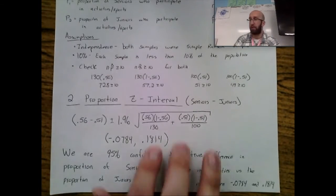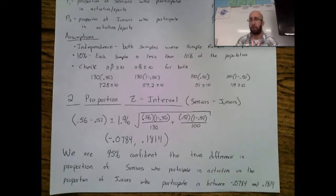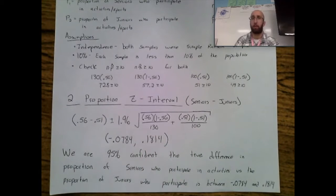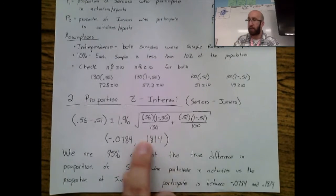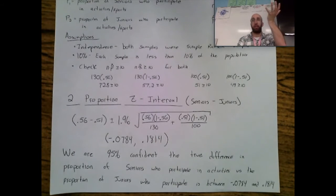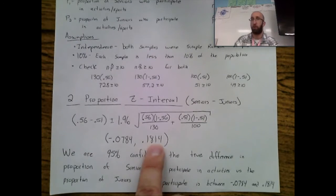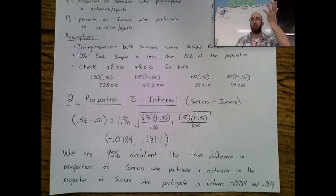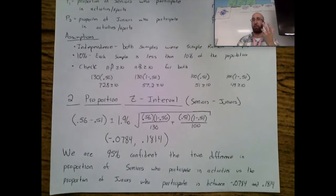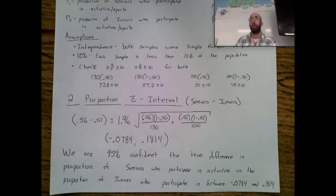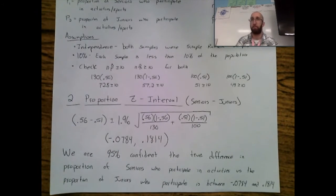This particular problem has an interesting scenario: the interval goes from negative to positive. If the difference is positive, that means more seniors than juniors participate in sports proportionally — a bigger number minus a smaller number yields positive. If it's negative, that means the senior proportion is smaller than the junior proportion — a small senior number minus a large junior proportion gives a negative result.